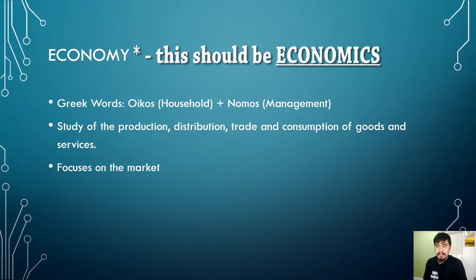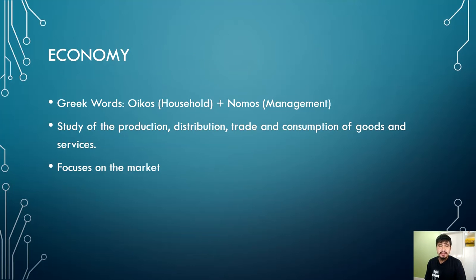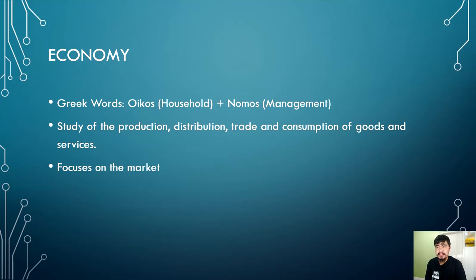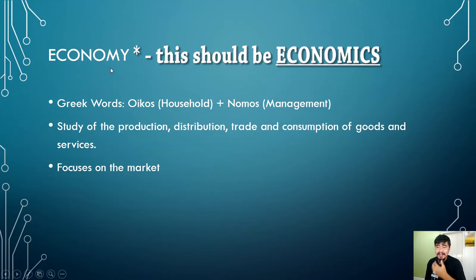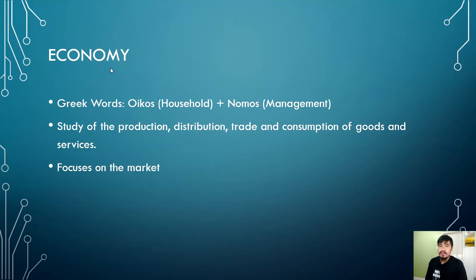So what is economics? In our first introduction video, I presented what social sciences is and we enumerated the different disciplines in social sciences, wherein we have political science, sociology, psychology, anthropology, and economics. Now for today, we'll define what economics is. To understand economics, we have to look at its etymology — its origin of words.